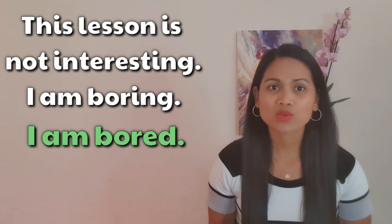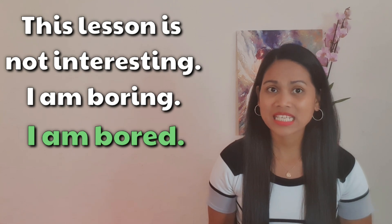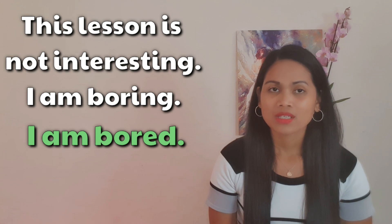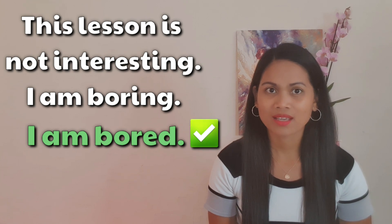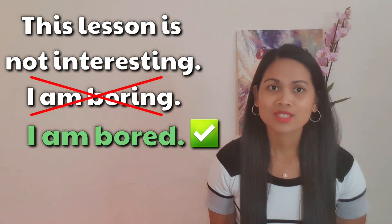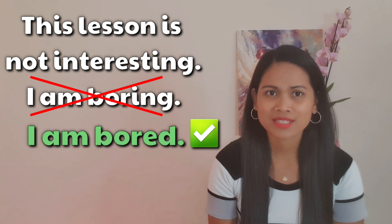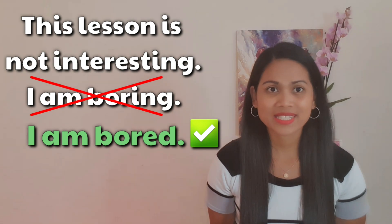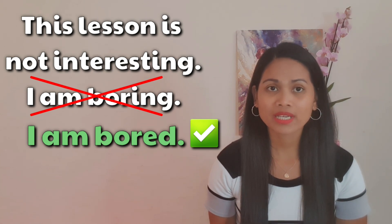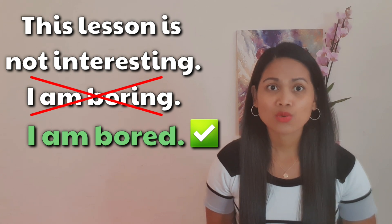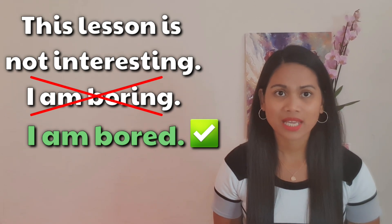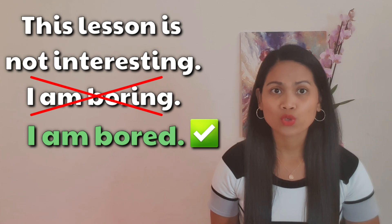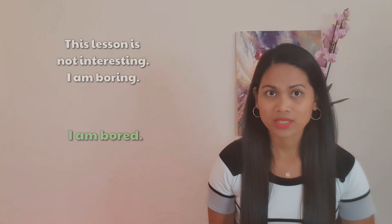When you're trying to express your feeling, you need to use the ED adjective. For example, if something is not interesting for you, you can say 'I am bored.' You don't say 'I am boring.' Many of my students say 'I am boring — let's have another lesson,' but this is actually wrong. Instead, you have to say 'I am bored,' because the subject there is 'I,' so you are expressing about the feeling. If you're trying to talk about the feeling of someone, then you need to use the ED adjective.